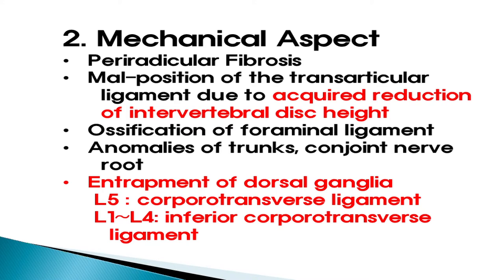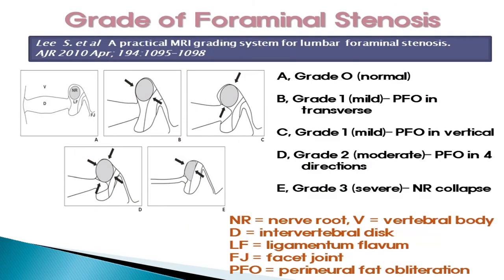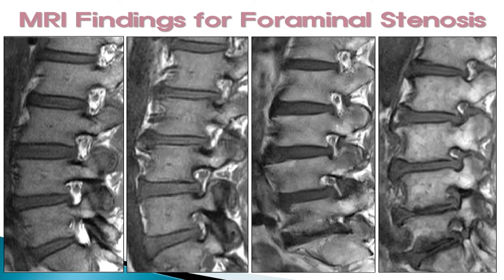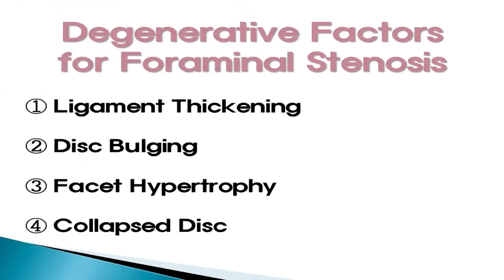At the L5 root, entrapment occurs by the corporotransverse ligament, and at L1 to L4 level by the inferior corporotransverse ligament. Here you can see the grading of foraminal stenosis: grade 0 is normal, grade 1 is mild with perineural fat obliteration in transverse or vertical direction, grade 2 is moderate with perineural fat obliteration in all four directions, and grade 3 is severe with nerve root collapse. Different factors for foraminal stenosis include ligament thickening, disc bridging, facet hypertrophy, and collapsed disc.